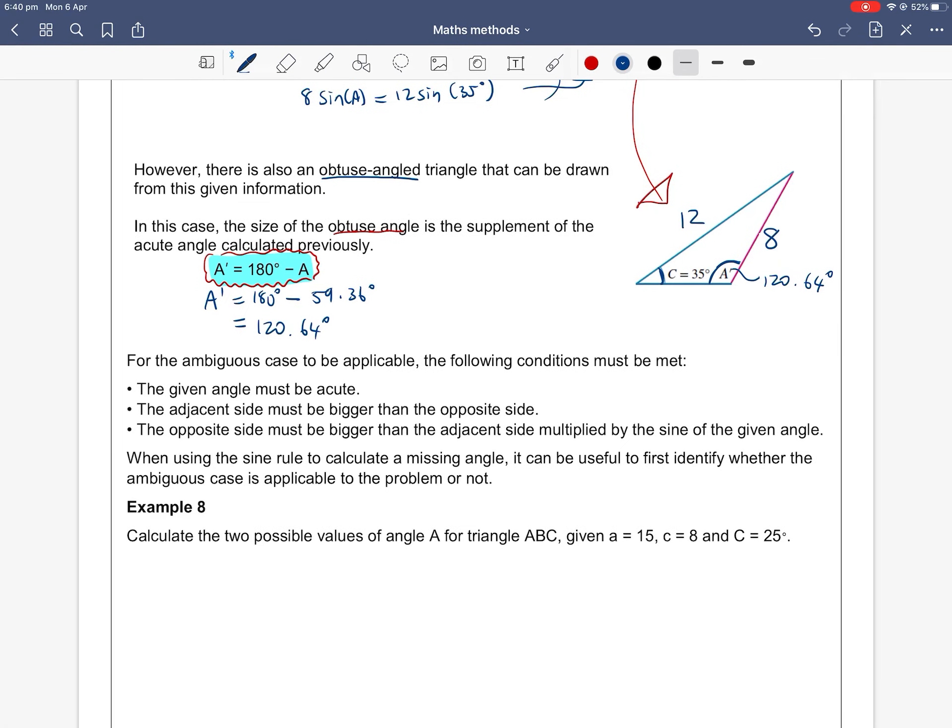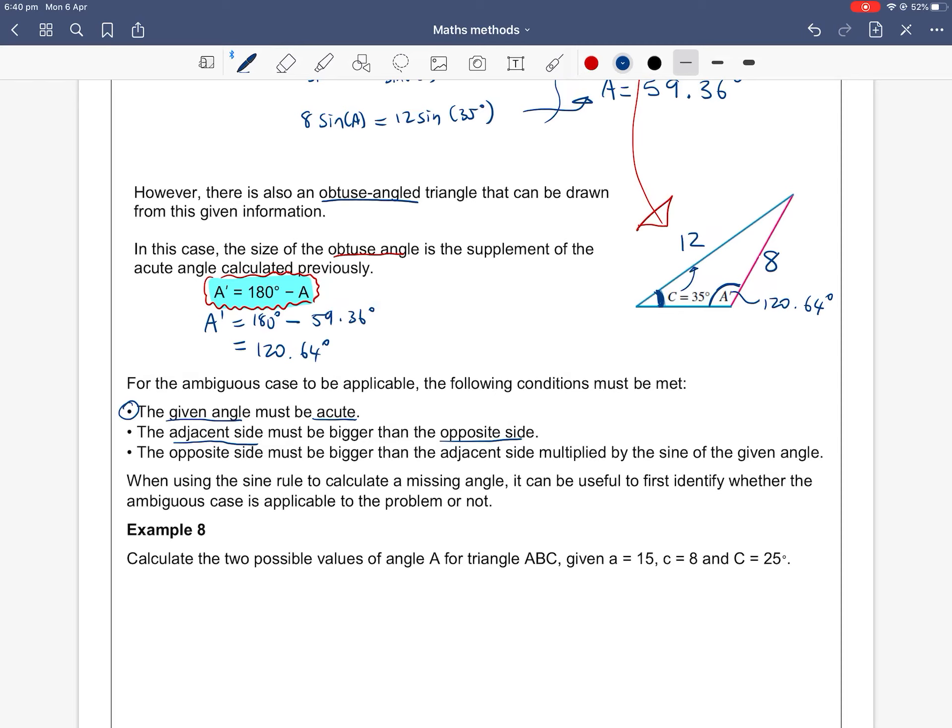Well, for the ambiguous case to be applicable, the following conditions must be met. The given angle must be acute, so this starting angle 35 degrees needs to be an acute angle. If your starting angle is more than 90 degrees, then there won't be an ambiguous case. The adjacent side must be bigger than the opposite side. So the adjacent side here is 12, opposite is 8, 12 is bigger than 8, so we could have an ambiguous case. The opposite side must be bigger than the adjacent side times the sine of the given angle here, the 35 degrees.